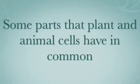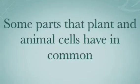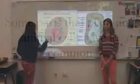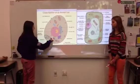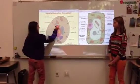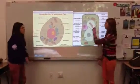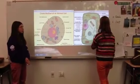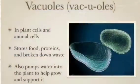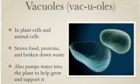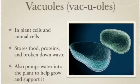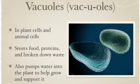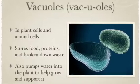Some parts that plant and animal cells have in common. This is where the vacuoles are in an animal cell, and this is where the vacuole is in a plant cell. Vacuoles are in both plant cells and animal cells. They store food, proteins, and broken down waste. They also pump water into plants to help them grow and support them.